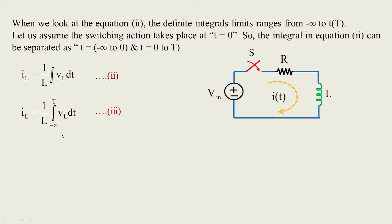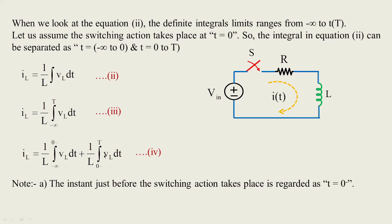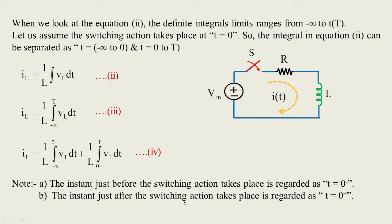The past history is indicated by minus infinity to the present t. This is divided into two intervals: (1/L) ∫ from −∞ to 0− — where 0− indicates just before switching, when the switch is open — and the interval from 0− to t. The instant just before the switching action takes place is regarded as t = 0−, and the instant just after switching is regarded as t = 0+.